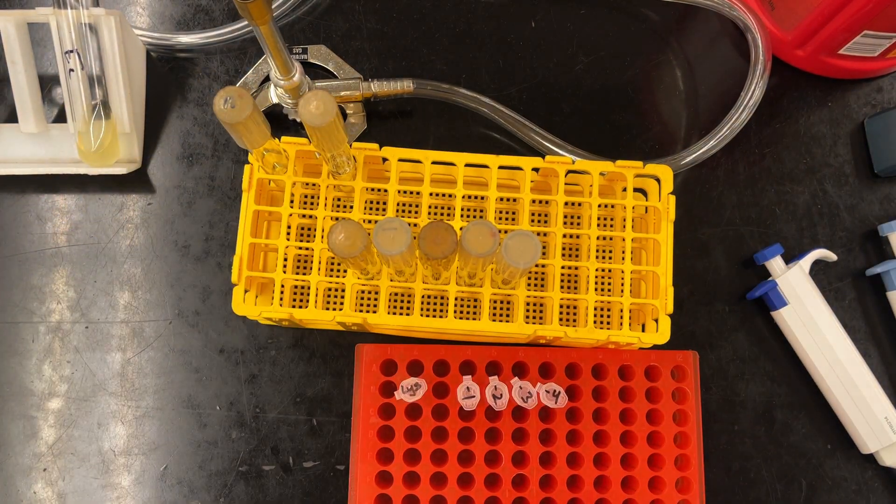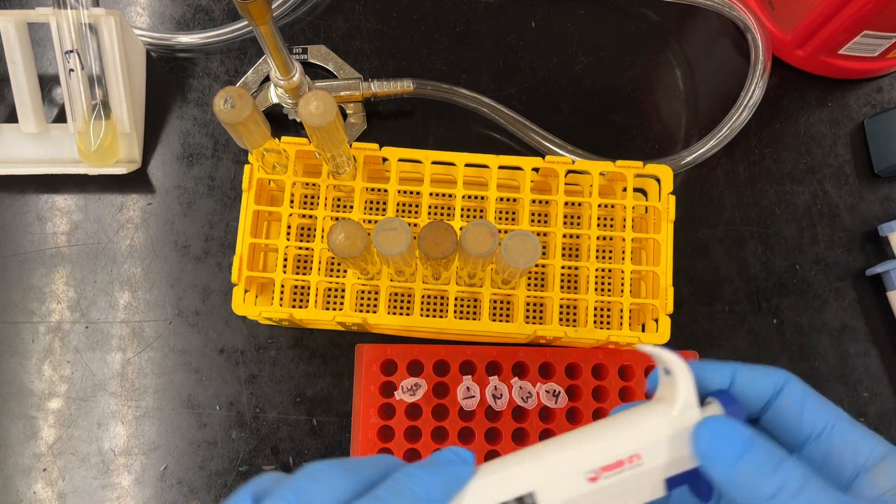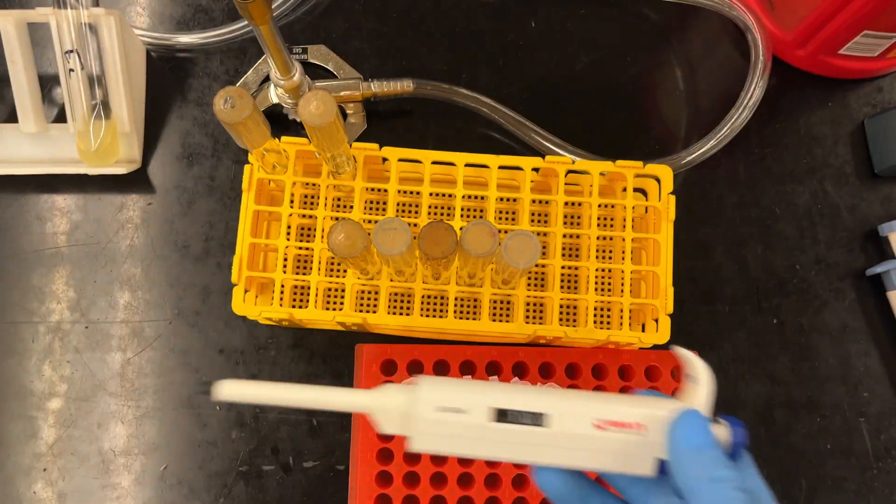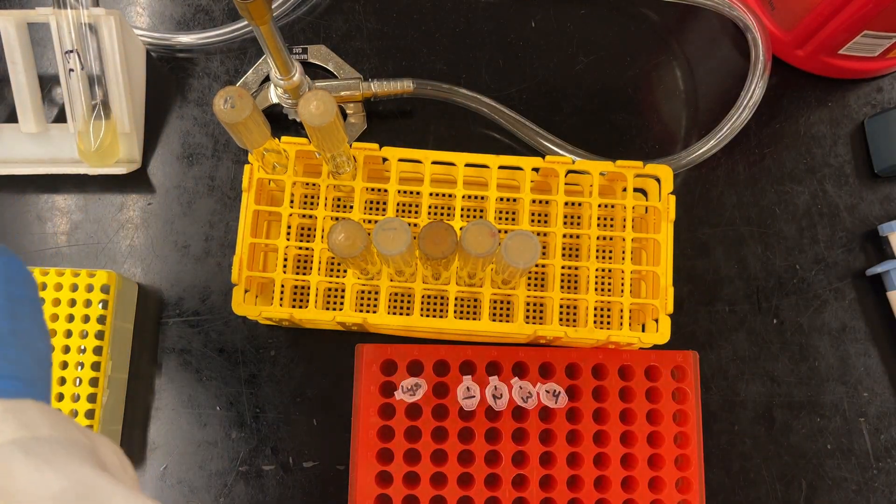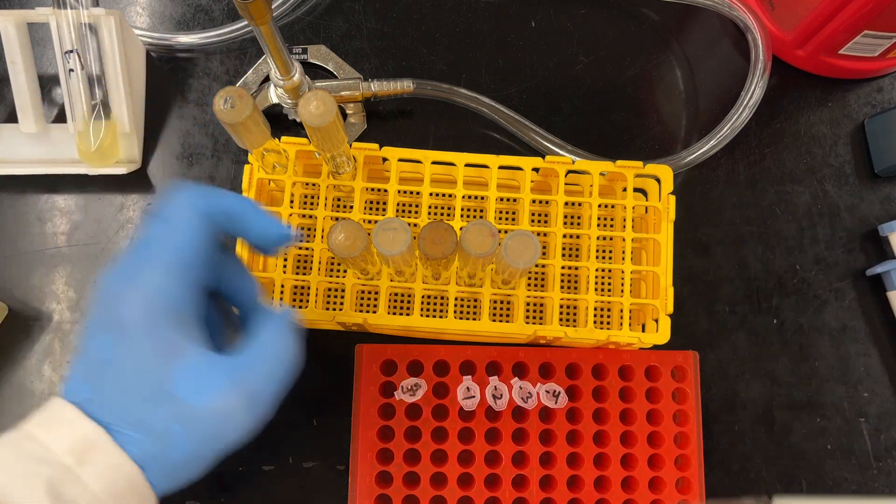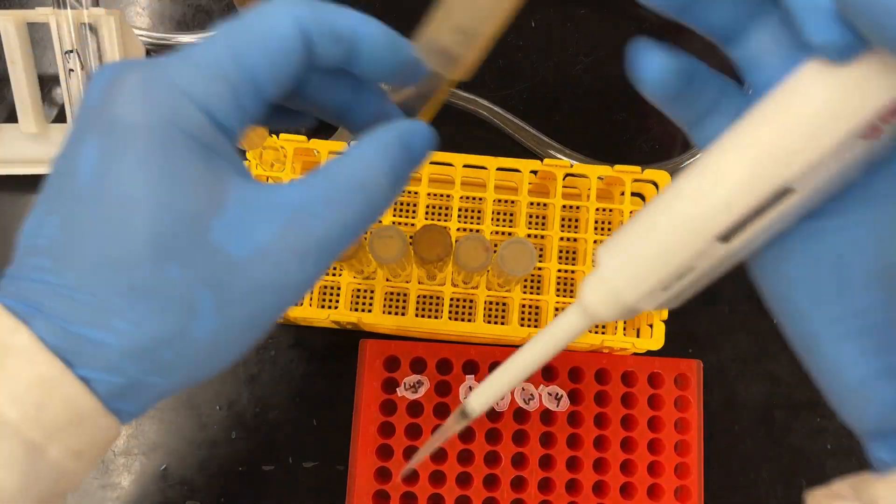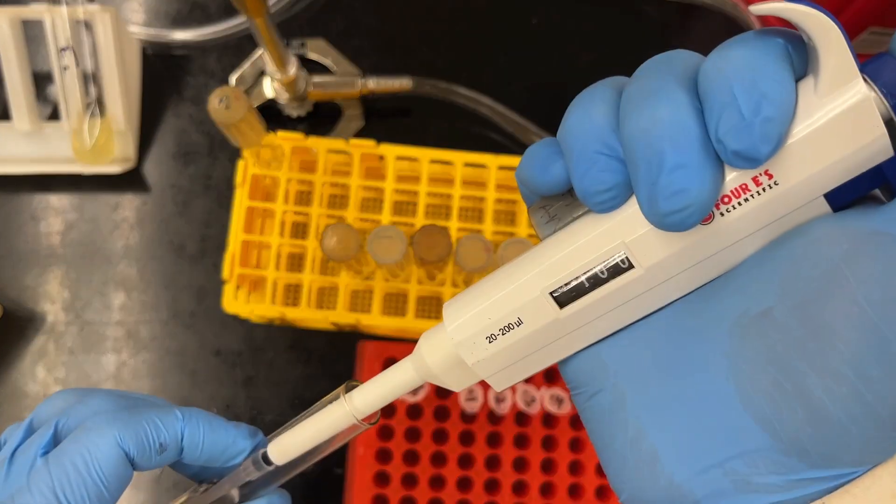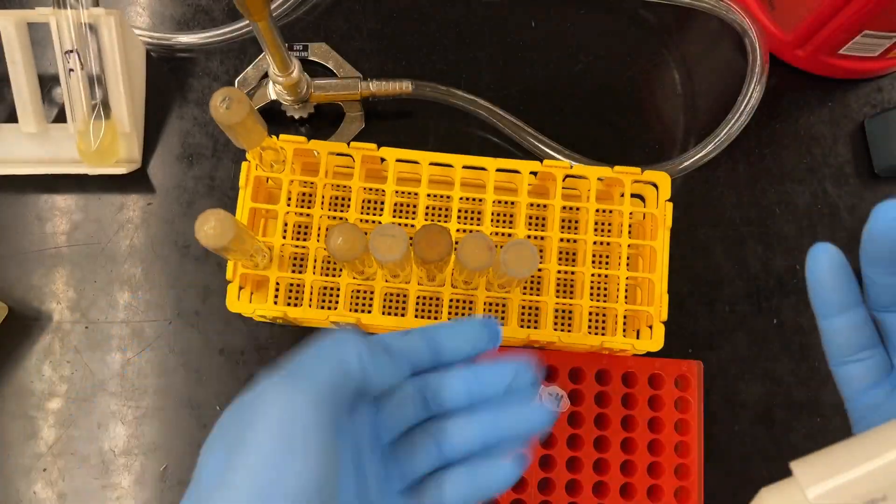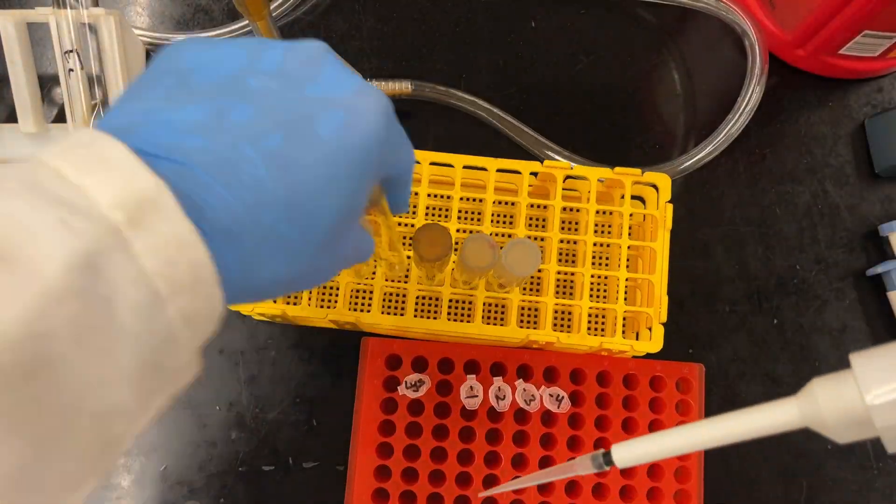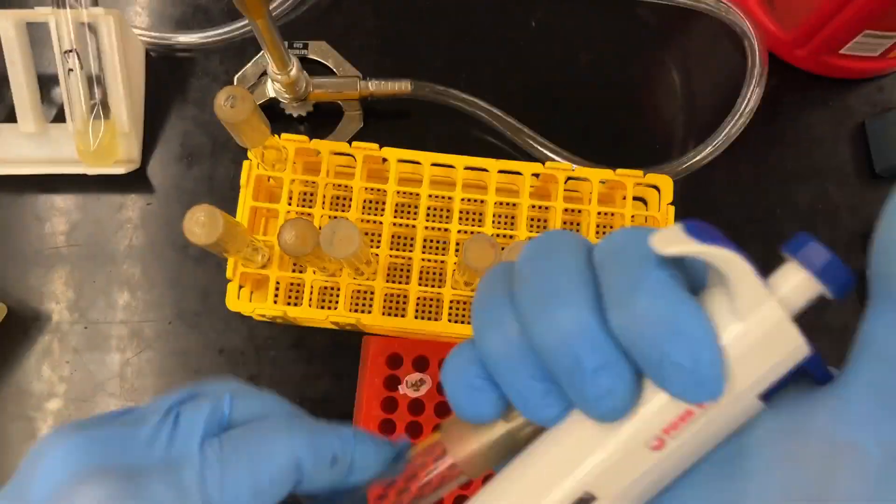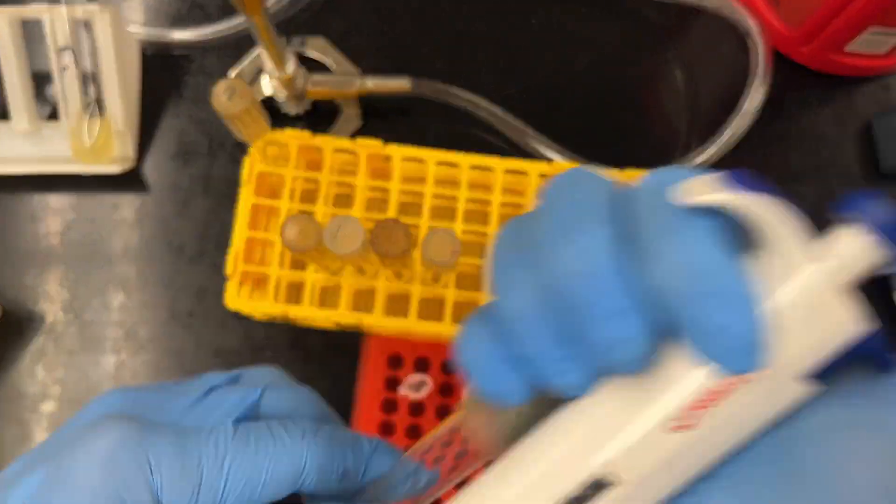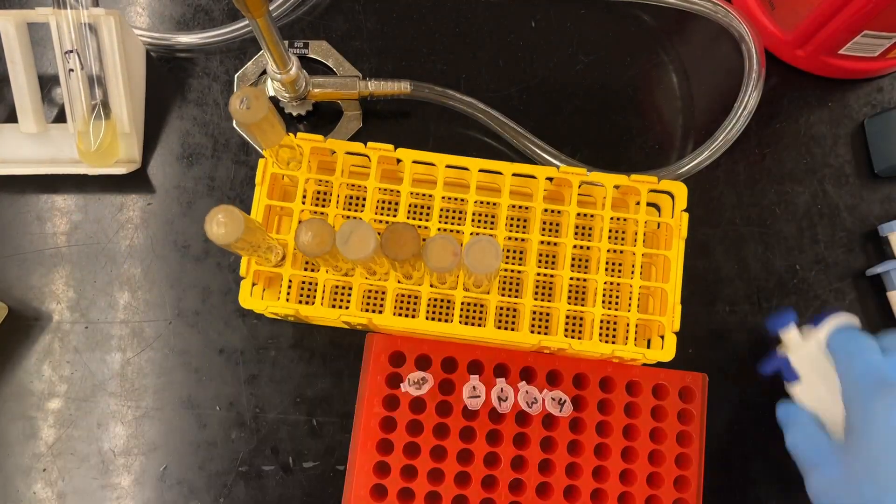And then now we mix everything together. So first things first, we need to add some phage buffer. So we just take 100 microliters of phage buffer and pipette that into every tube. Pretty straightforward. So we have our phage buffer, 100 microliters. And this, once again, provides a nice environment, good salt balance. And then most importantly, the magnesium that allows the phages to adsorb, A-D-S-O-R-B. So 100 microliters into every tube.